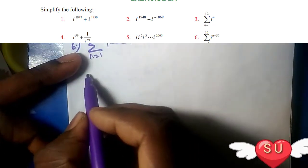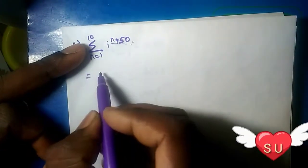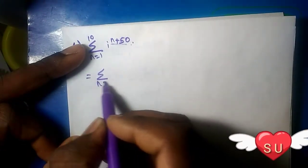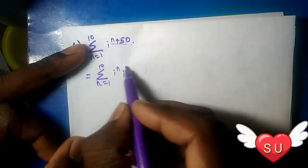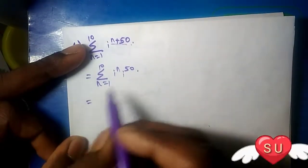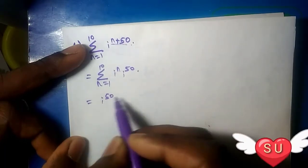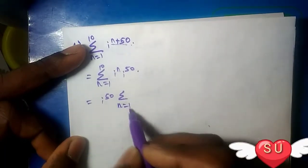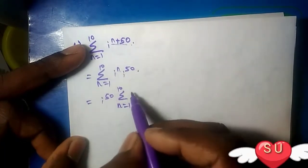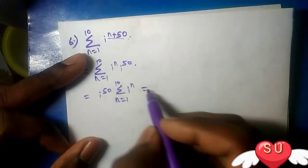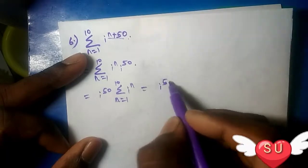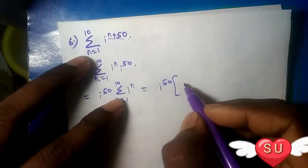We can rewrite this expression by factoring. The sum from n equals 1 to 10 of i^n can be taken out with i^50. So we have i^50 times the sum from n equals 1 to 10 of i^n.